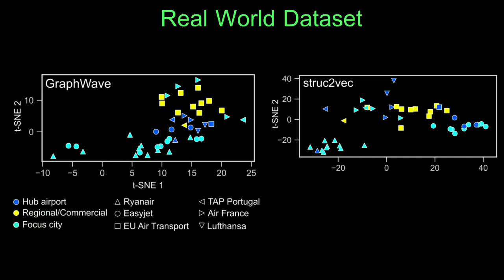In GraphWave TSNE results, airports with the same structural roles are embedded close together even if they come from different airline networks, demonstrating GraphWave's ability to learn meaningful structural embeddings for real-world networks.